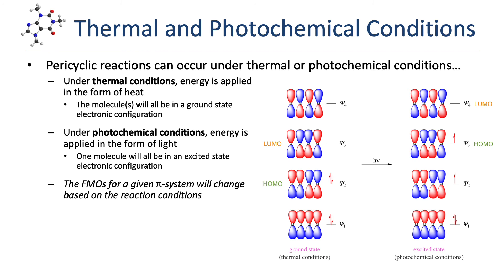If the correct form of light energy is applied, the molecule can change to an excited state. On the right, we see the molecule in the lowest energy excited state, in which one electron has been excited from psi-2 to psi-3. The excited state occurs under photochemical conditions, and 1,3-butadiene will now have psi-3 as the HOMO and psi-4 as the LUMO. We can see that the HOMO and LUMO change based on whether the reaction is performed under thermal or photochemical conditions. In the upcoming lessons, you'll see how all of this frontier molecular orbital theory applies to the various types of pericyclic reactions.